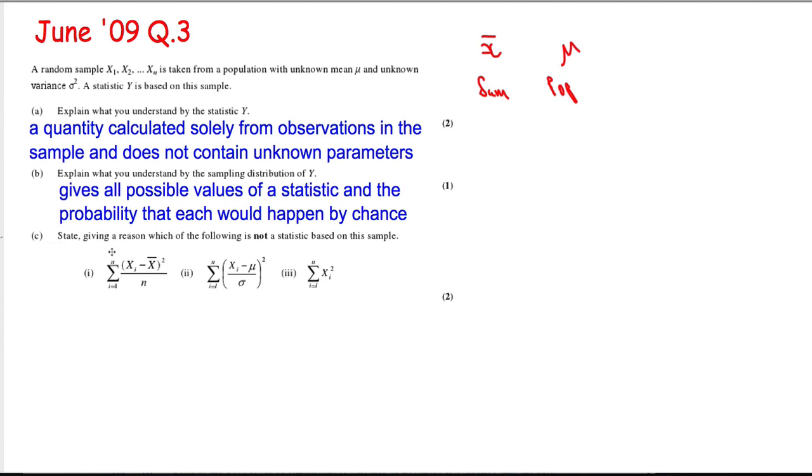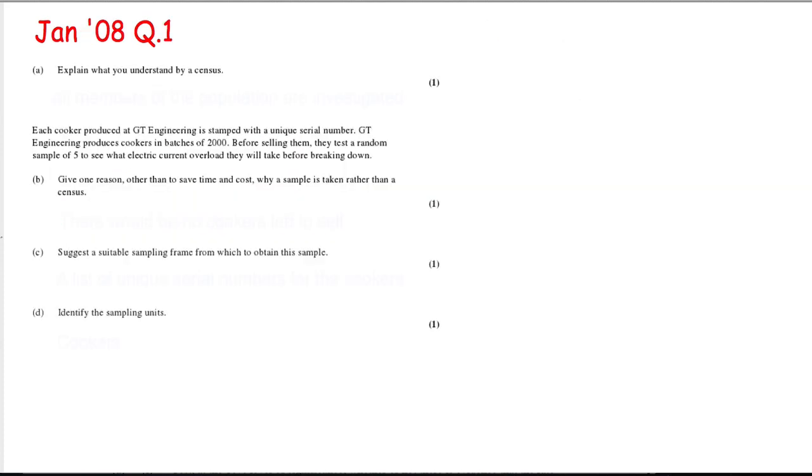The last part: state giving a reason which of the following is not a statistic based on this sample. Quick scan tells me straight away this is the one we're looking for. And that's not a statistic because it contains population parameters, and population parameters are actually unknown. So these are variables, we can't use them.